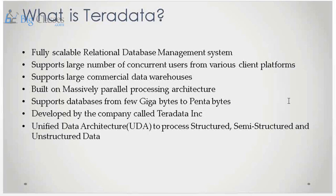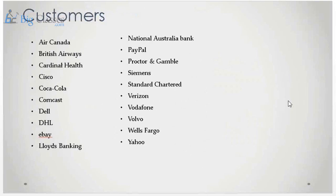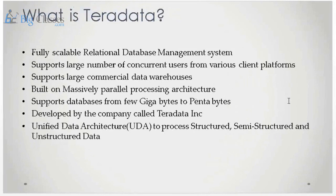Teradata and similar software support a large number of concurrent users. Looking at the customer list, you can see big names like British Airways, Cisco, Coca-Cola, Lloyd's Banking, Vodafone, and Wells Fargo. These companies have a huge customer base, deal with large numbers of transactions, store huge volumes of data, and have hundreds of business users accessing the data warehouse to improve revenue.